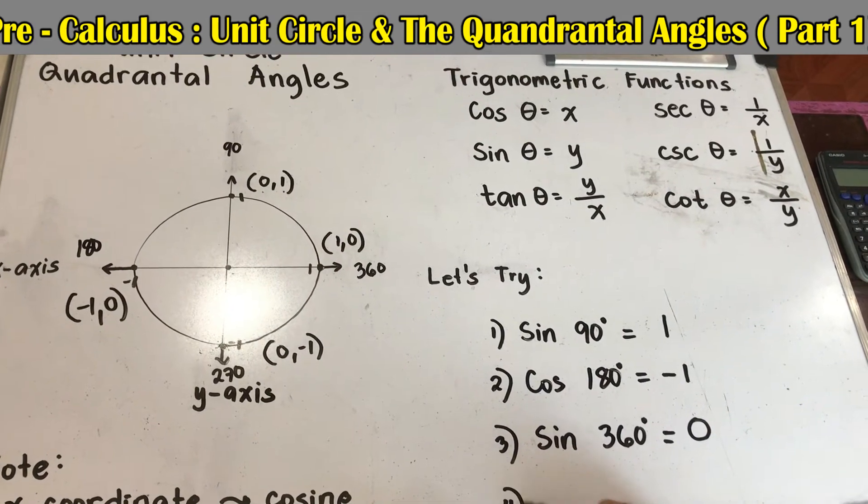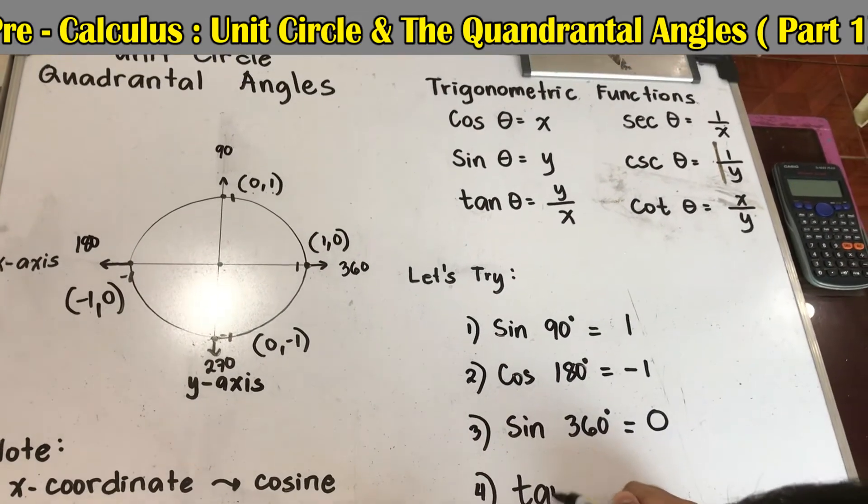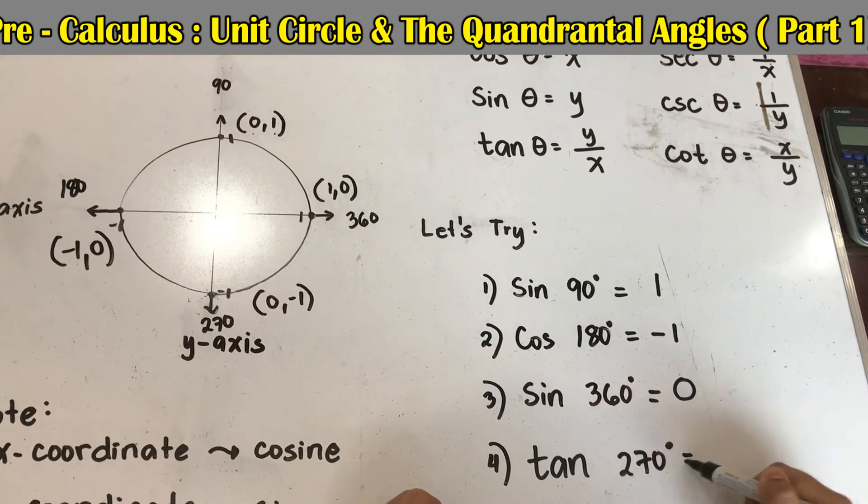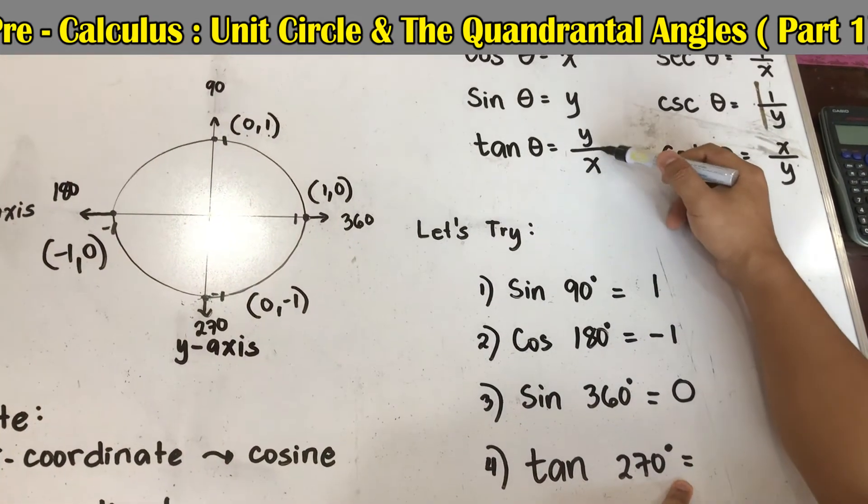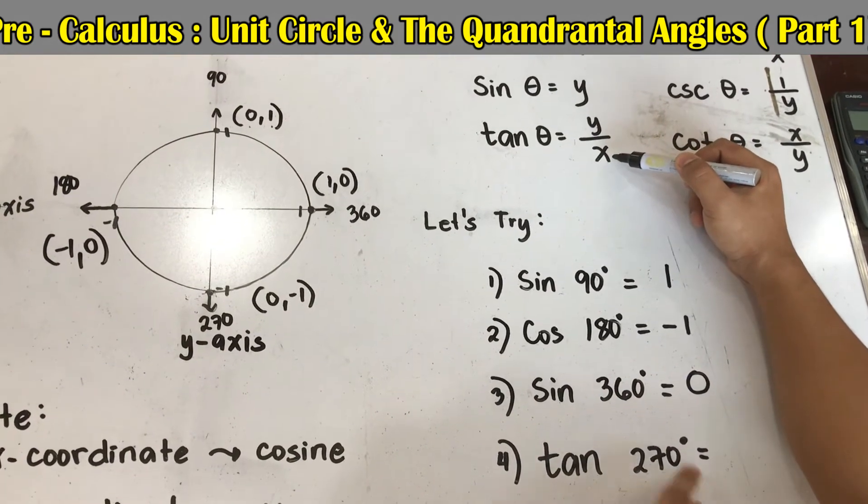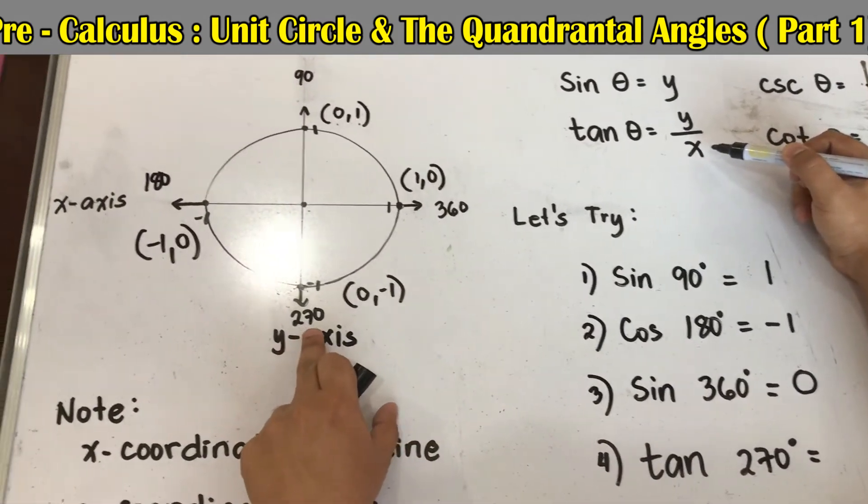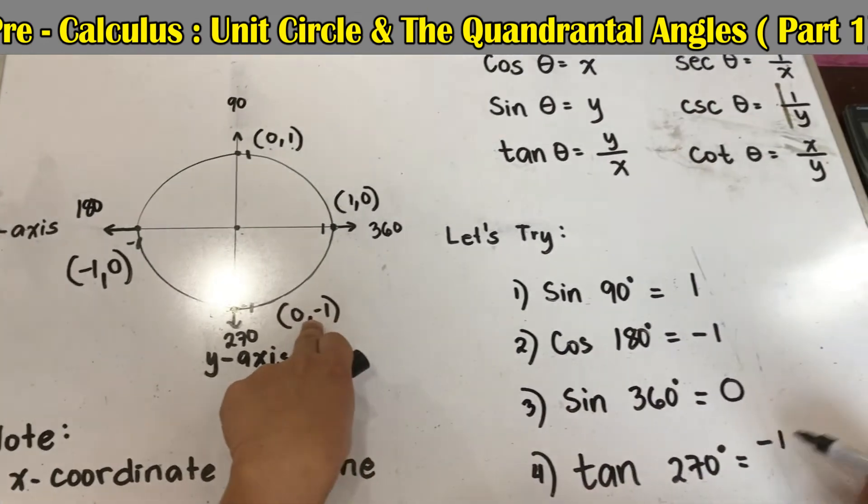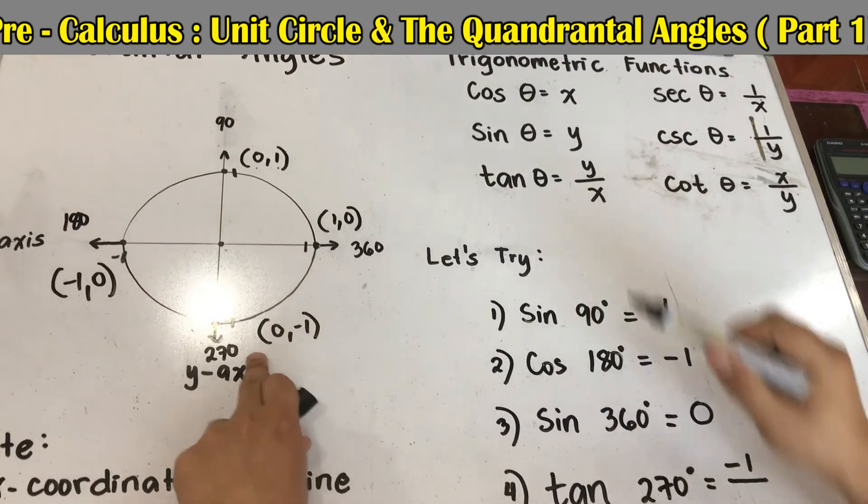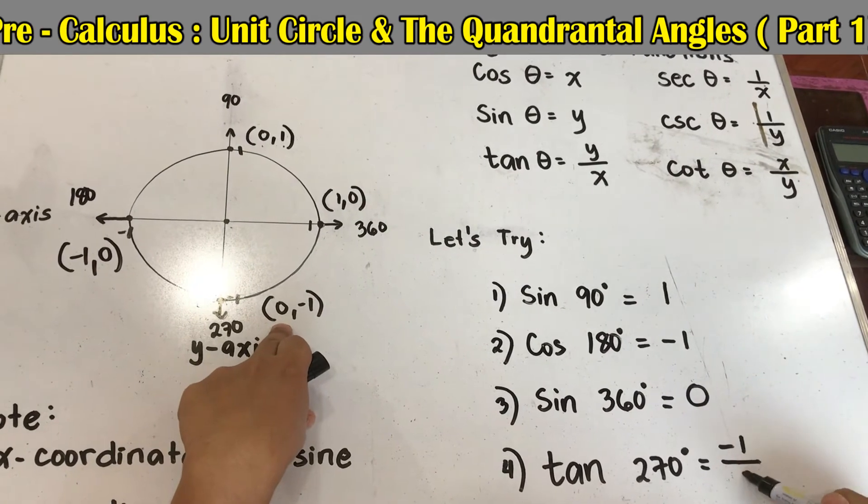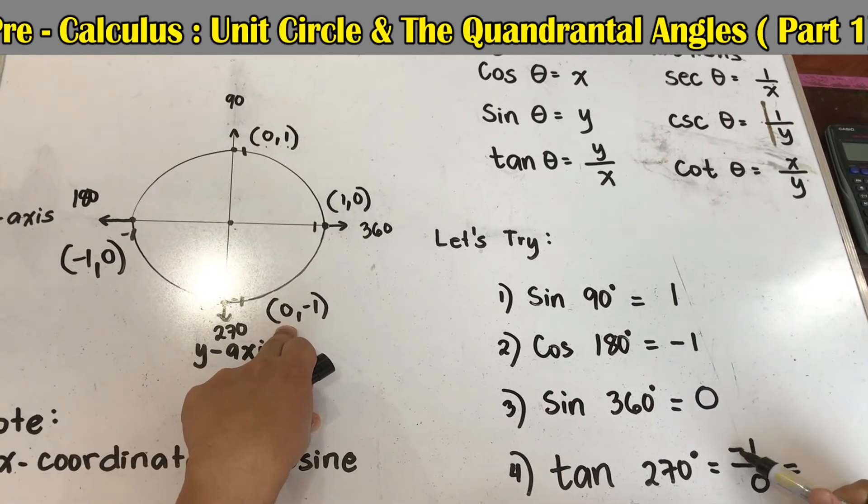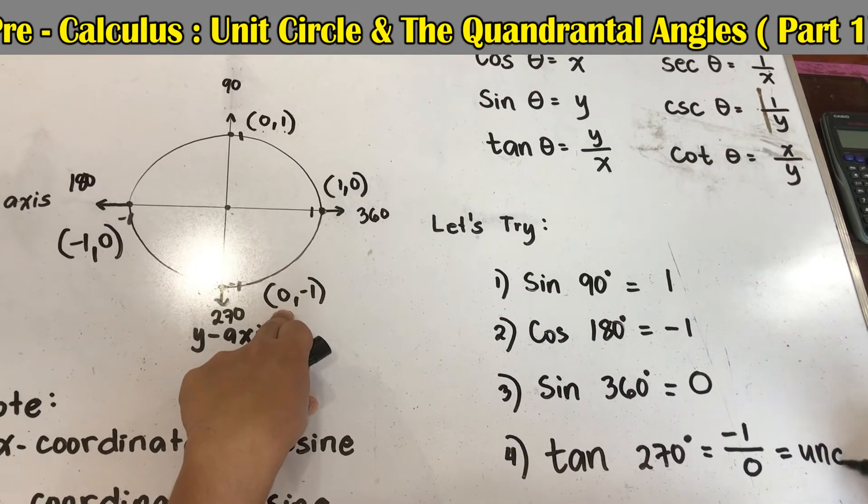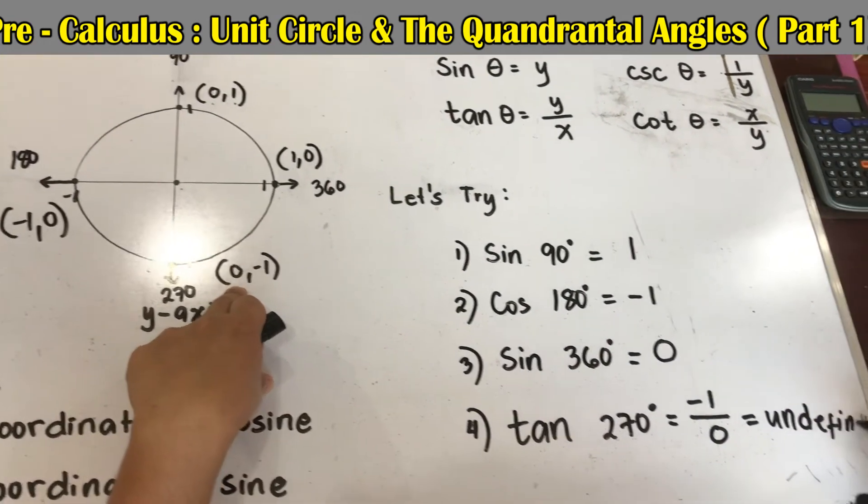Number 4, tangent 270 degrees. Tangent is y over x. So locate our 270, it's here. y is negative 1 over x is 0. Negative 1 over 0, that is undefined.